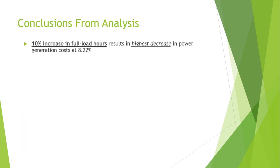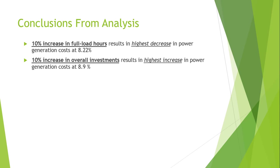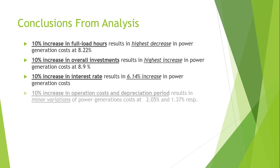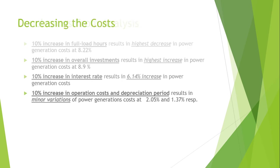Concluding, we can say that a 10% increase in full load hours will result in the highest decrease in power generation cost at 8.22%; a 10% increase in overall investment will result in the highest increase in power generation cost at 8.9%; a 10% increase in interest rate will result in a 6.14% increase; and 10% increases in operation cost and depreciation period will result in minor variations at 2.05% and 1.37% respectively.